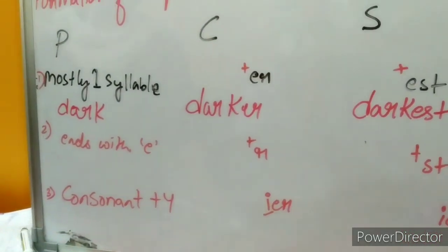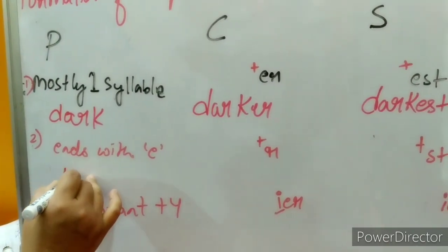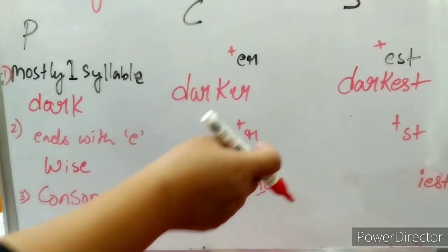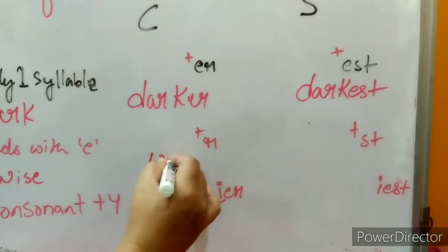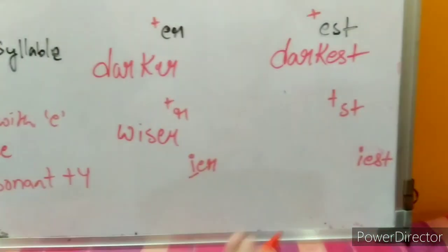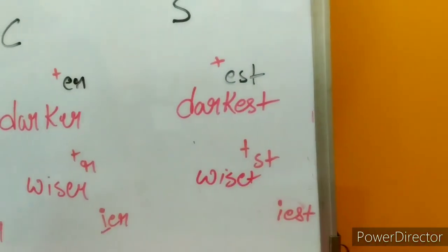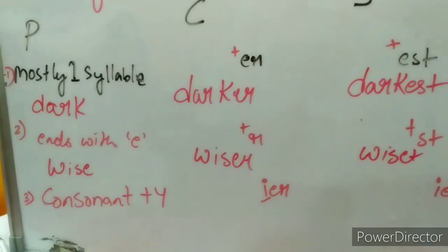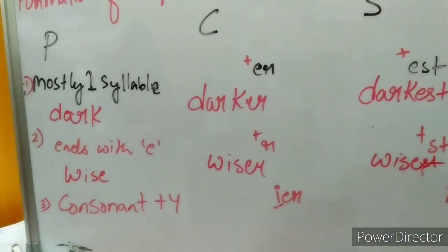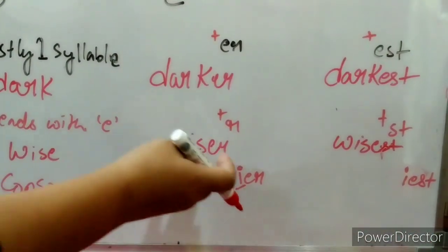When the positive adjective ends with 'e', like wise, you add -r to make it comparative degree: wiser. And you add -st to make it superlative degree: wisest, W-I-S-E-S-T. Same way: noble, nobler, noblest; pure, purer, purest.